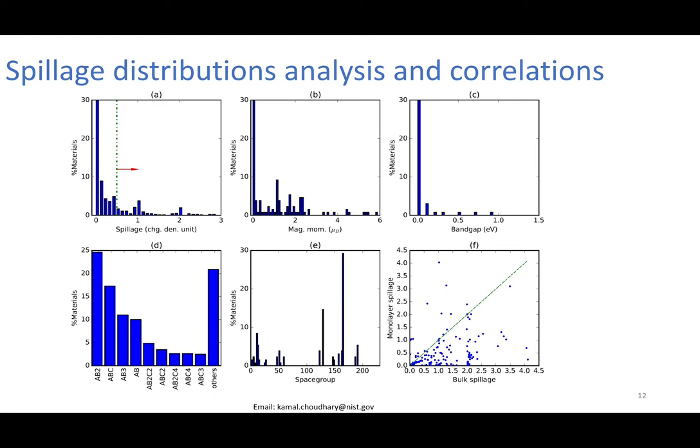We have several prototypes, not just MoS2 or AB2 type, but several other types of 2D materials as well. These are favored by high symmetry. On figure F, we saw the bulk and monolayer spillage. As obvious, as we have less number of atoms, we will have less number of spillage in monolayers.